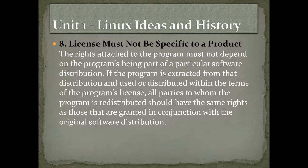License must not be specific to a product. That means I cannot say that if my source code is used in product A they can sell it or use it for commercial purposes, but if persons use my source code in product B or operating system B they cannot commercialize it and have to give it for free. I cannot do that — that is partiality.